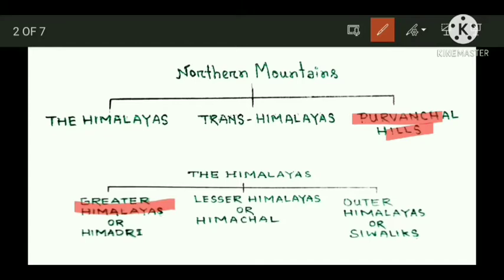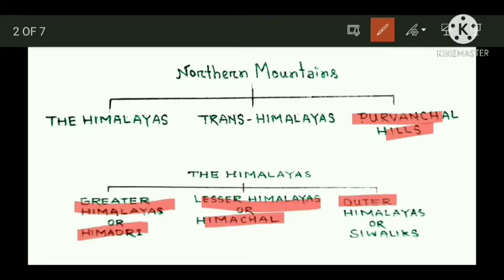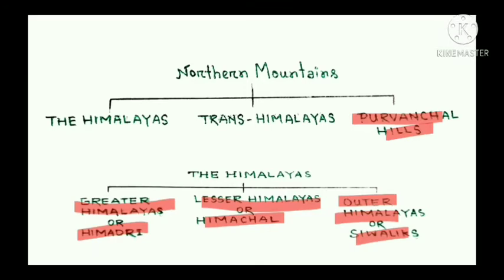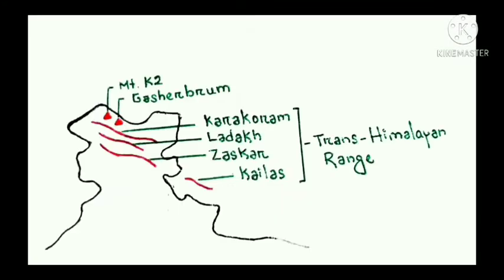The Himalaya is divided into three parallel ranges: the Great Himalayas or Himadri, the Lesser Himalayas or Himachal, and the Outer Himalayas or Shivaliks.